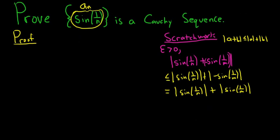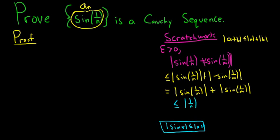There is another identity from mathematics that is very useful in problems like this: the absolute value of sine of x is less than or equal to the absolute value of x. Super useful. So here this is less than or equal to the absolute value of 1 over n plus the absolute value of 1 over m, which equals 1 over n plus 1 over m.